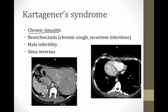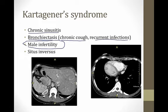Kartagener syndrome is a collection of abnormalities that some patients with ciliary dyskinesia develop. Its elements are: chronic sinusitis from poor ciliary function in the sinuses; bronchiectasis in the lungs with chronic cough and recurrent infections; male infertility because sperm do not have normal ciliary function; and situs inversus, where the organs in the thorax and abdomen are reversed. The mechanism of situs inversus is not entirely clear, but it's believed that cilia play some role in proper organ positioning during development. On CAT scan, the liver may be on the left side of the body and the heart on the wrong side.